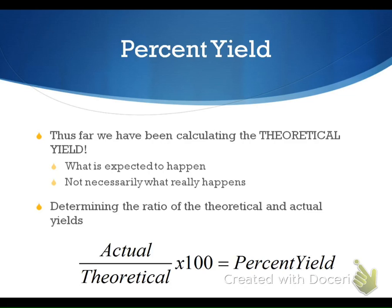Percent yield means we're going to look at the percent of what we should have gotten compared to what we actually got in the lab. We're looking at the ratio between what we actually got and what we theoretically should have gotten. Think of it this way: if you plant 10 flowers and only 7 grow, your percent yield is 70% — because you lost 30% of your products somewhere. The 10 flowers planted would be your theoretical yield; the 7 that grew would be your actual yield.